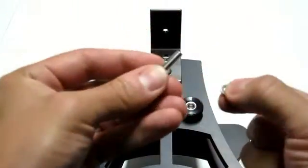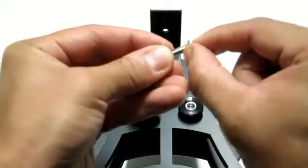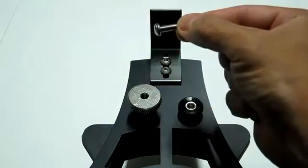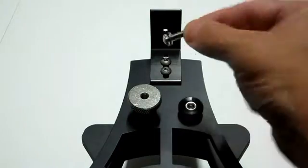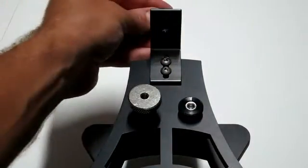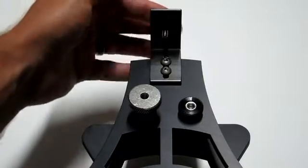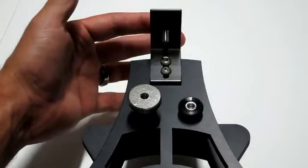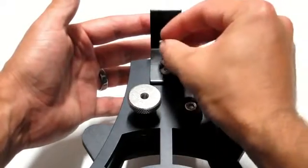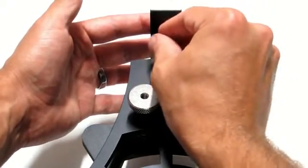Once the bracket is secured with both screws, slide a metal washer onto a three quarter inch long machine screw, then insert it through the outside unthreaded hole of the bracket. Add a metal nut for safe keeping until you are ready to mount the cell in your telescope tube.